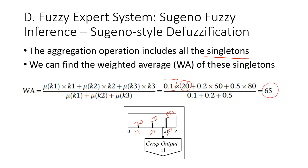This gives a result of 65. If you recall, the result from Mamdani previously was 64.75, and the values do not differ much.